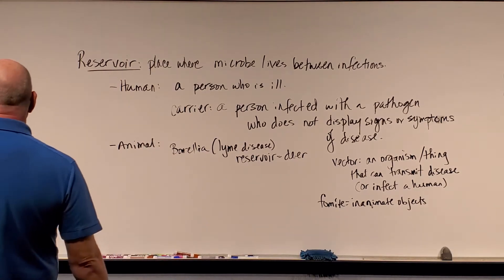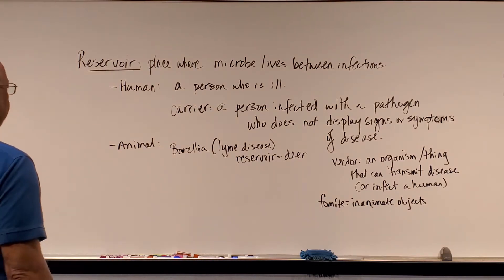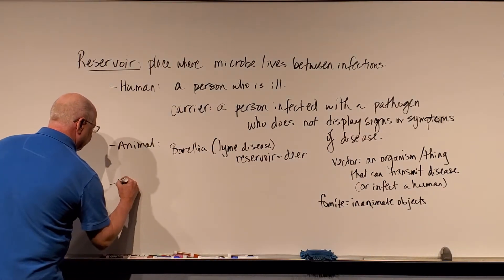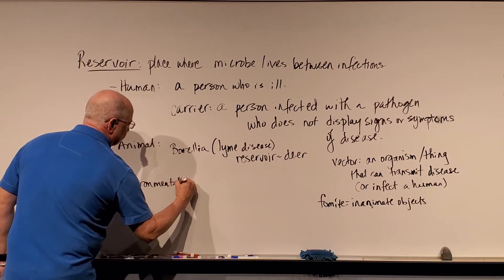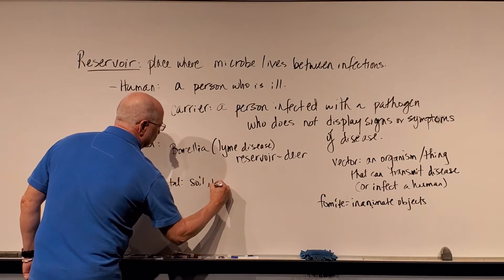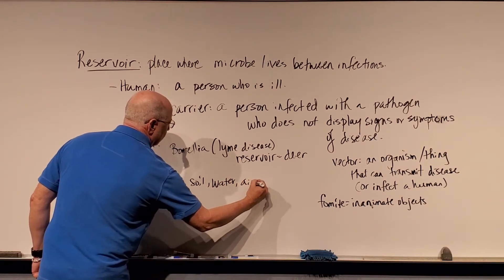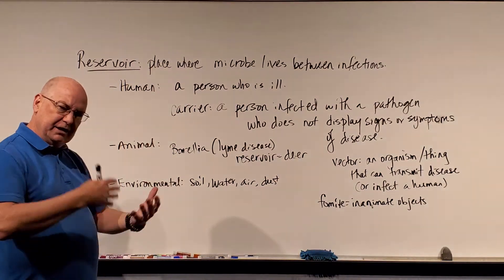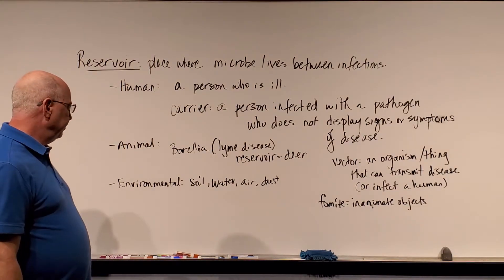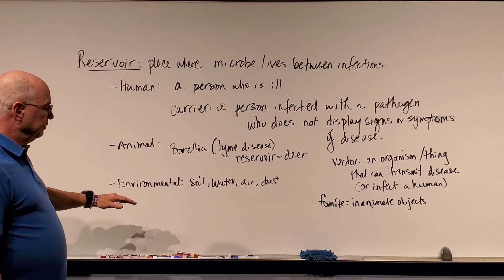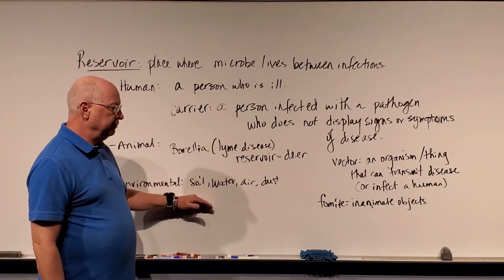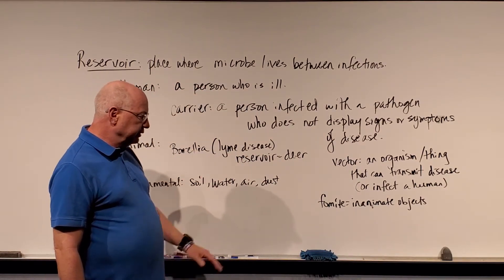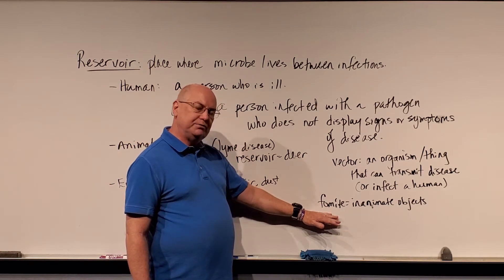When we're talking about sources of transmission, we're talking about reservoirs — and there are human reservoirs, animal reservoirs, and environmental reservoirs. Environmental reservoirs would be things like soil, water, air, dust in a house. If you're in an old dusty attic and breathe in some dust, you might pick up an infectious agent. Those would be environmental reservoirs; they can hold on to pathogens for a while. A vector is anything that can transmit the disease from a reservoir to a person, and inanimate objects that serve as vectors we call fomites.